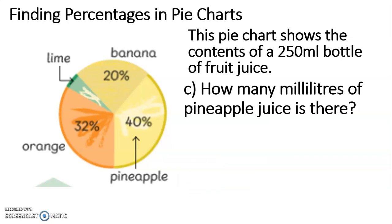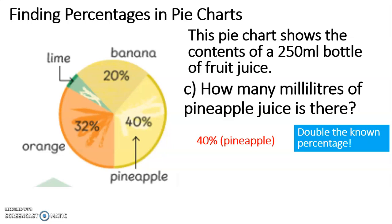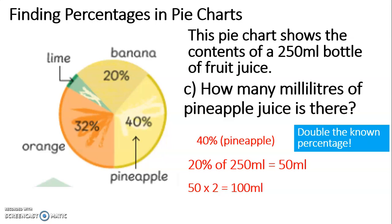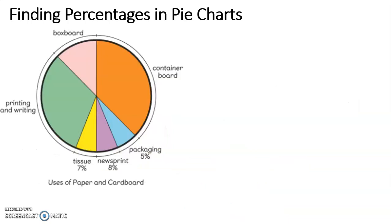C — how many millilitres of pineapple juice is there? 40% of the bottle is pineapple. Let's use the percentage we already know: 20% of 250 millilitres was 50 millilitres. 40% is double 20%, so 50 multiplied by 2 is 100. That means pineapple juice is 100 millilitres of that bottle — 50% of the bottle. Here's our final pie chart.